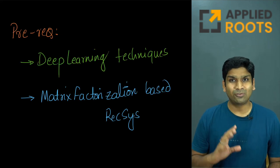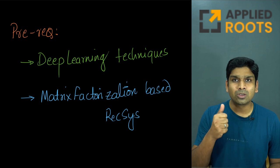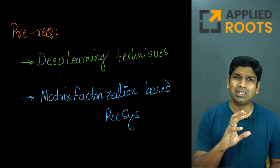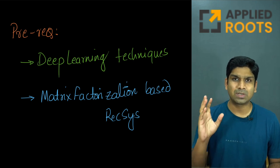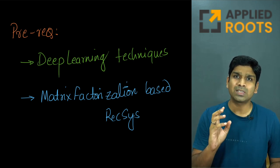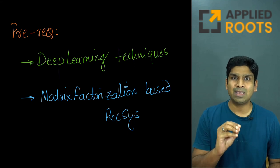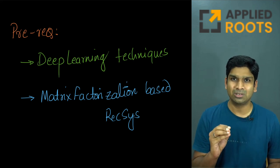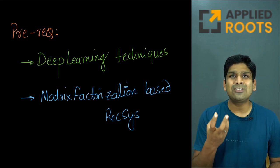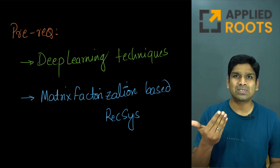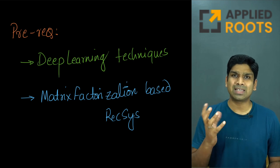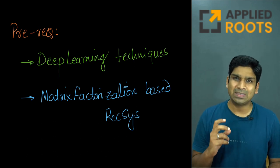The prerequisites for this live session would be a good understanding of deep learning algorithms, starting from simple multilayered perceptrons to transformers, CNNs, LSTMs, etc., and also a good understanding of matrix factorization based strategies for recommender systems. Because once you know these concepts, it's very easy for us to build on top of them, introduce new architectures and new algorithms, and also discuss some design choices you have when you have to deploy these systems.